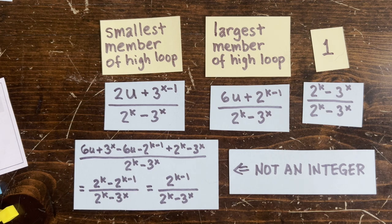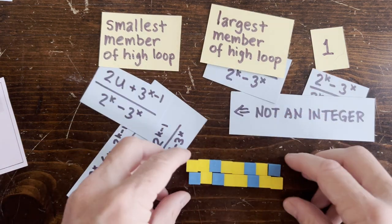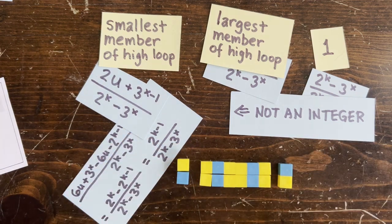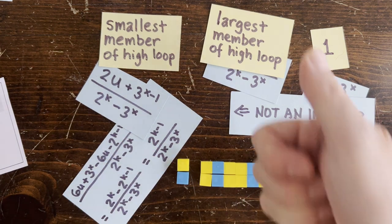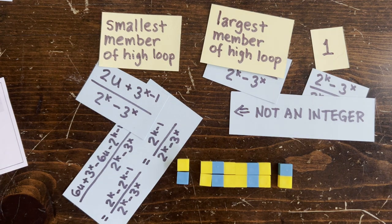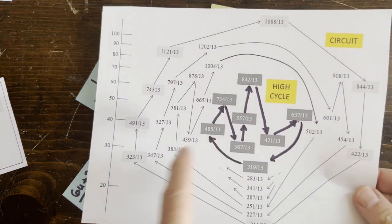By the way, the shared operation sequences in the middle form a palindrome. Also, the whole thing only works if k and x are co-prime, which is okay because we took care of the earlier cases. Pretty satisfying. Now, if we can only deal with the rest of these loops in between the circuit loop and the high loop...